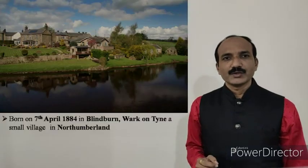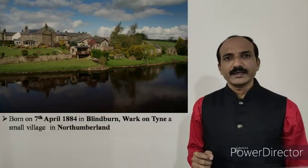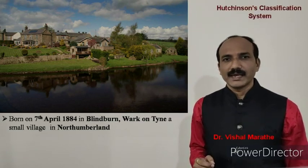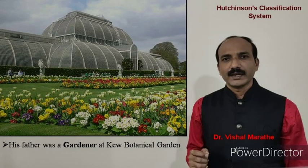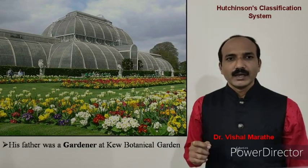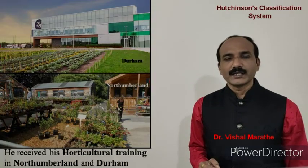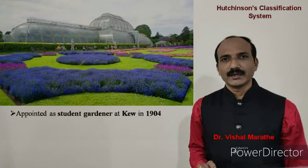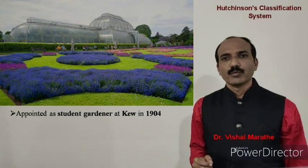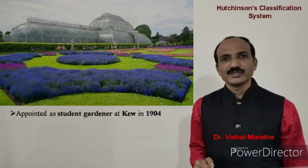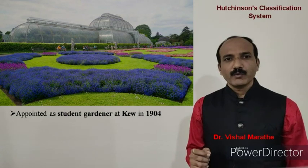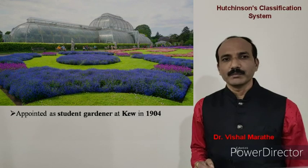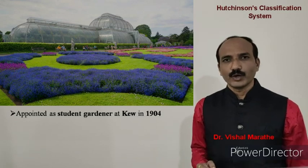John Hutchinson was born on 7th April 1884 in Northumberland. He grew up with plants as his father was a gardener at Kew Botanical Garden. He received his horticultural training in Northumberland and Durham and was appointed as a student gardener in Kew Botanical Garden in 1904. He was very influenced by J.D. Hooker after first meeting him while working in the Kew Botanical Garden.